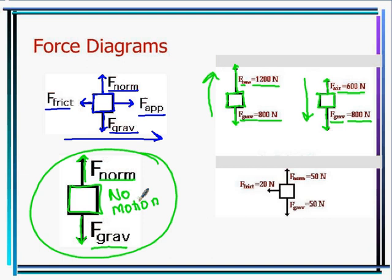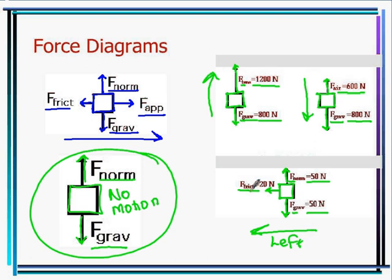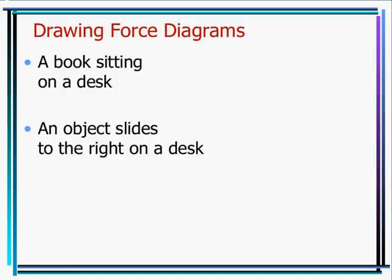If forces in both directions are equal, the object doesn't move — like pushing against a heavy desk and neither you nor the desk moves. Next example: force normal equals 50 Newtons, force of gravity equals 50 Newtons, and there's a force to the left of 20 Newtons. The object moves left because that 20 Newton force is unopposed. It won't move up or down since those forces are equal.